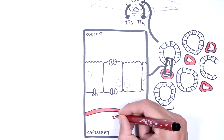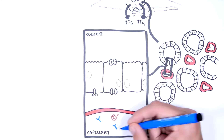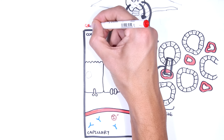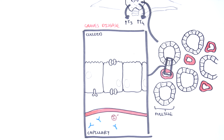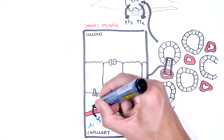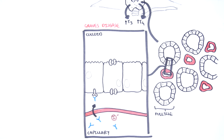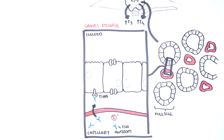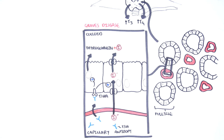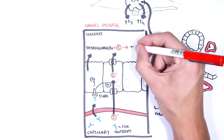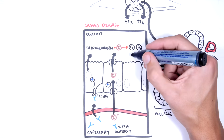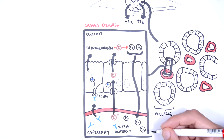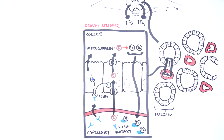The autoimmune disorder Graves' disease is the most common cause of hyperthyroidism. It is much more common in women than in men and begins between ages 20 and 40 years. In Graves' disease, there are autoantibodies against the thyroid-stimulating hormone receptor that stimulate and activate it. Activated TSH receptors increase thyroglobulin and iodine in the colloid, meaning more T3 and T4 are produced and enter circulation, resulting in hyperthyroidism.